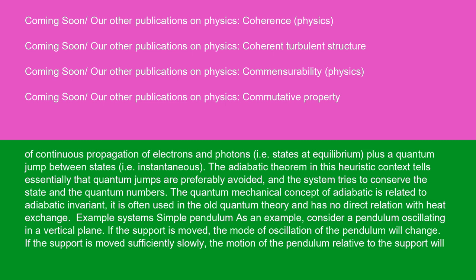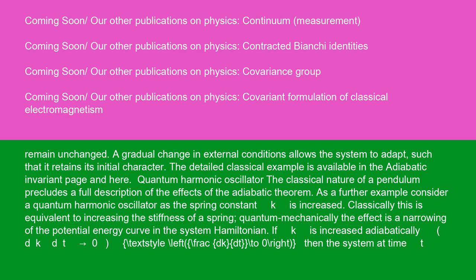The quantum mechanical concept of adiabatic is related to the adiabatic invariant. It is often used in the old quantum theory and has no direct relation with heat exchange. As an example system, consider a pendulum oscillating in a vertical plane. If the support is moved sufficiently slowly, the motion of the pendulum relative to the support will remain unchanged. A gradual change in external conditions allows the system to adapt such that it retains its initial character.